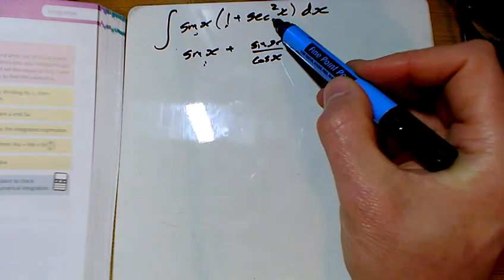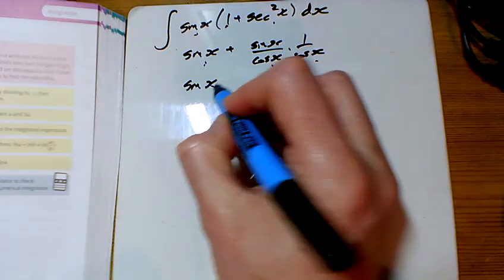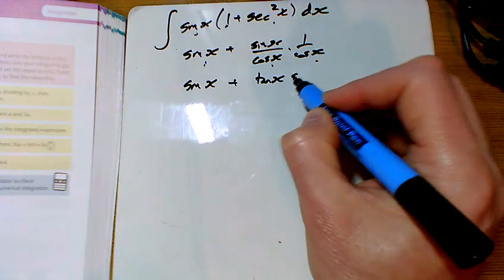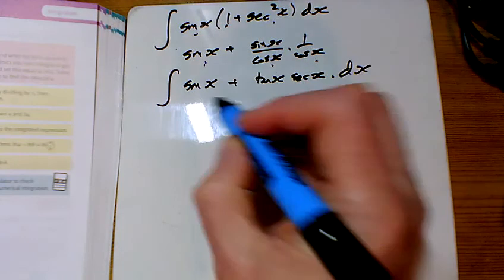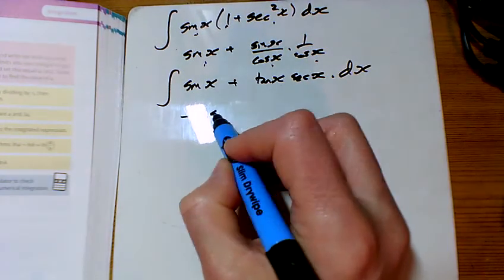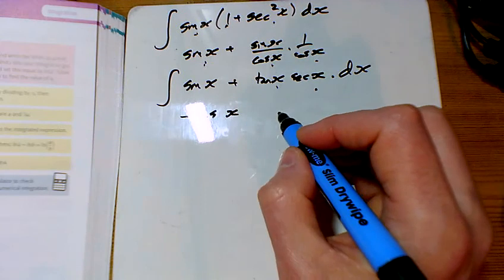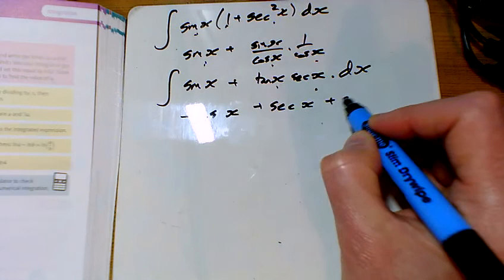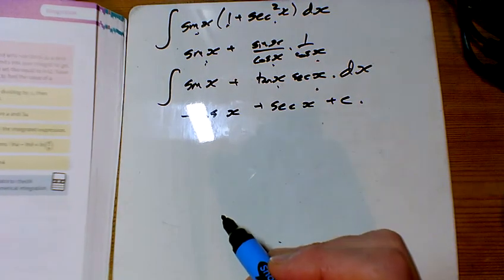So this is sine x plus and that's a tan x sec x and I'm trying to integrate this. Sine x just integrates to minus cos and this is a tan sec and tan sec goes to sec. So there's e.